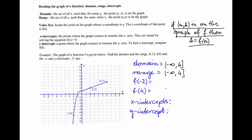Therefore, the y-coordinate of that point, −7, is the value of the function at negative 2. This is by definition of the graph of the function. So f(−2) = −7.